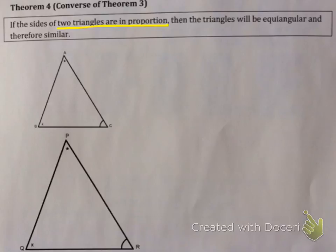It's basically the converse of theorem 3. Remember theorem 3 says that if you can prove angle, angle, angle in a triangle, then the sides have to be in proportion and therefore the triangles have to be similar. Whereas this one says, if you're told that two triangles have sides in proportion, then the triangles have to be equiangular, and therefore they have to be similar.